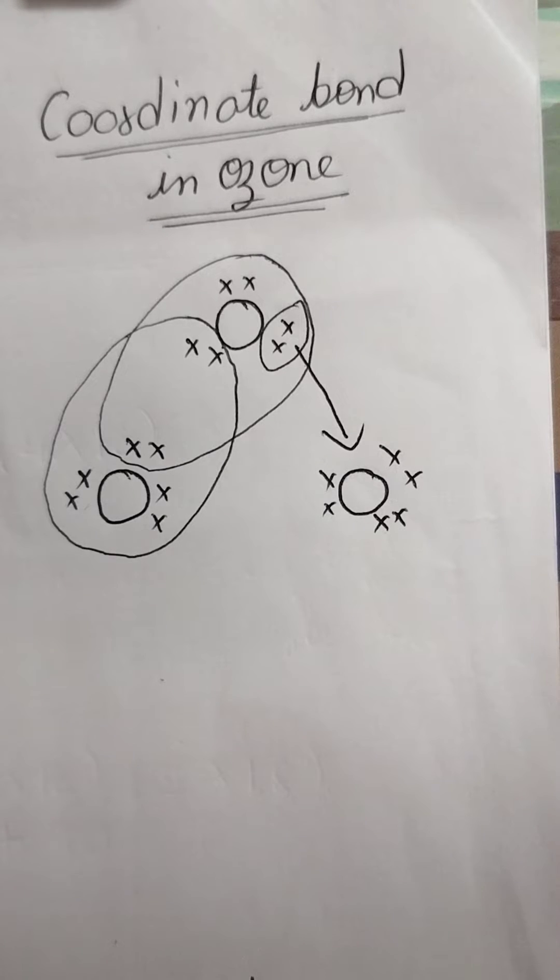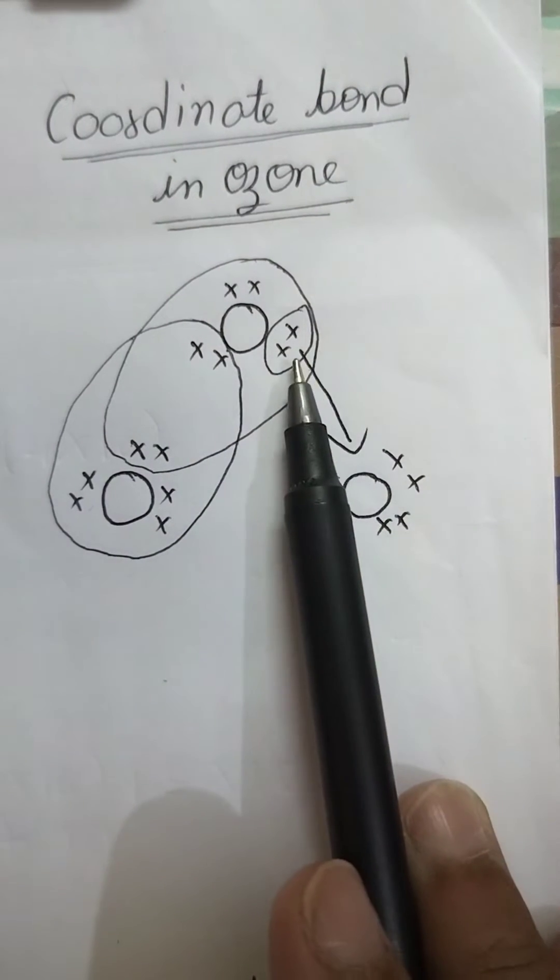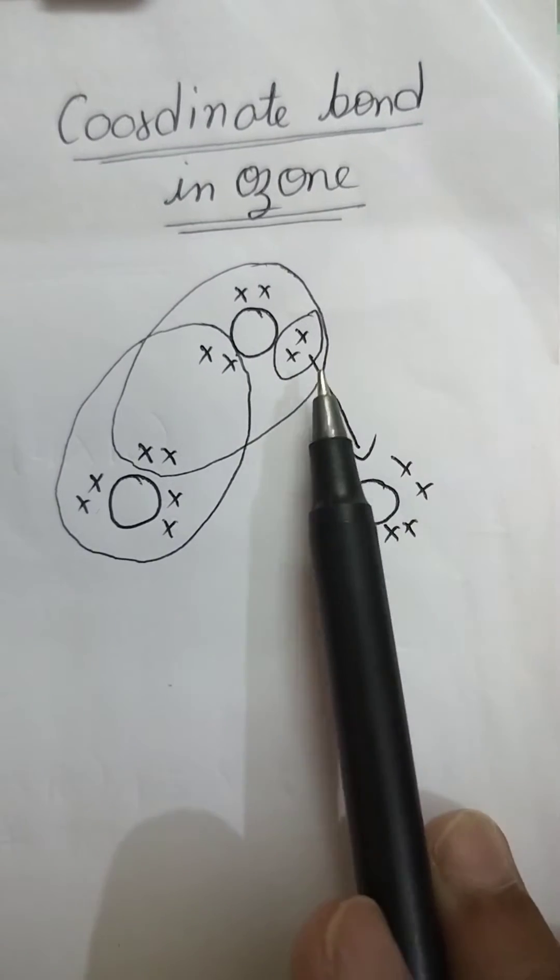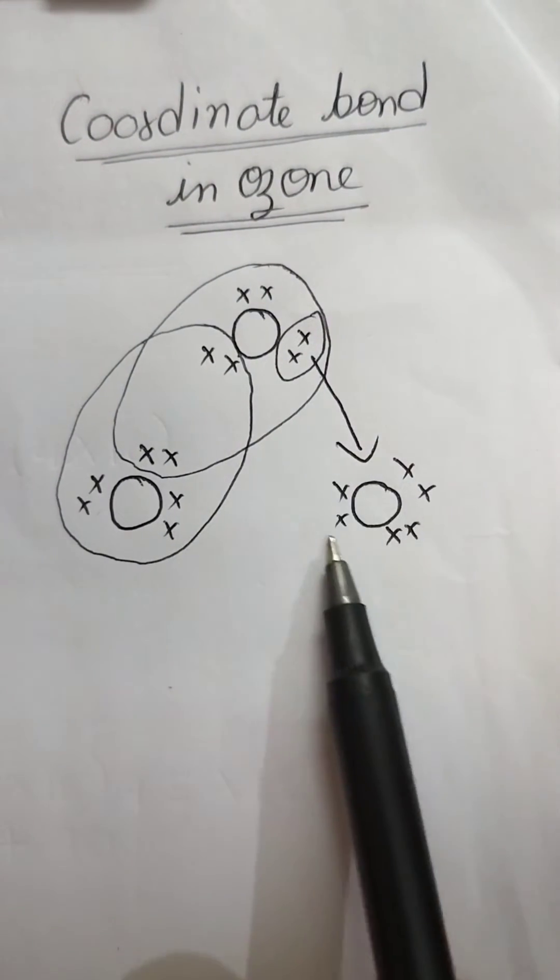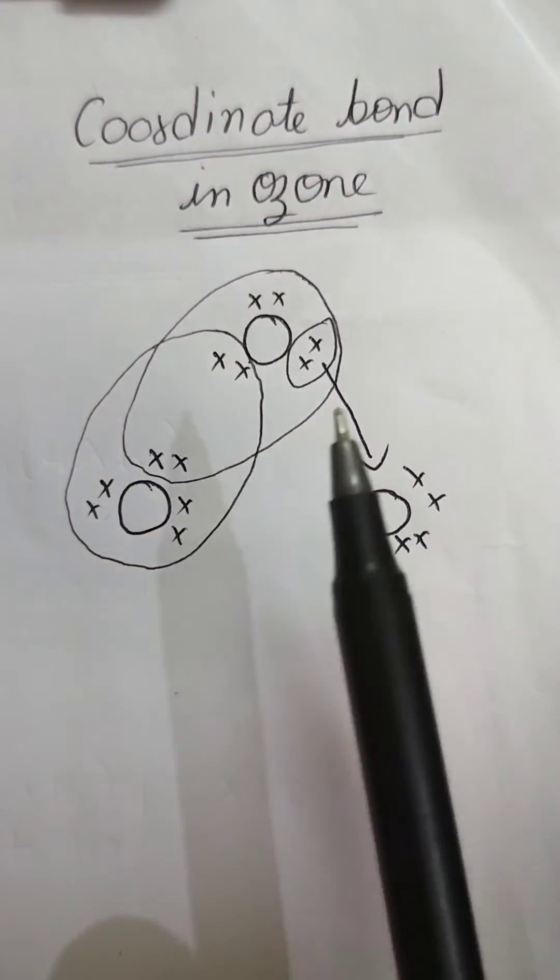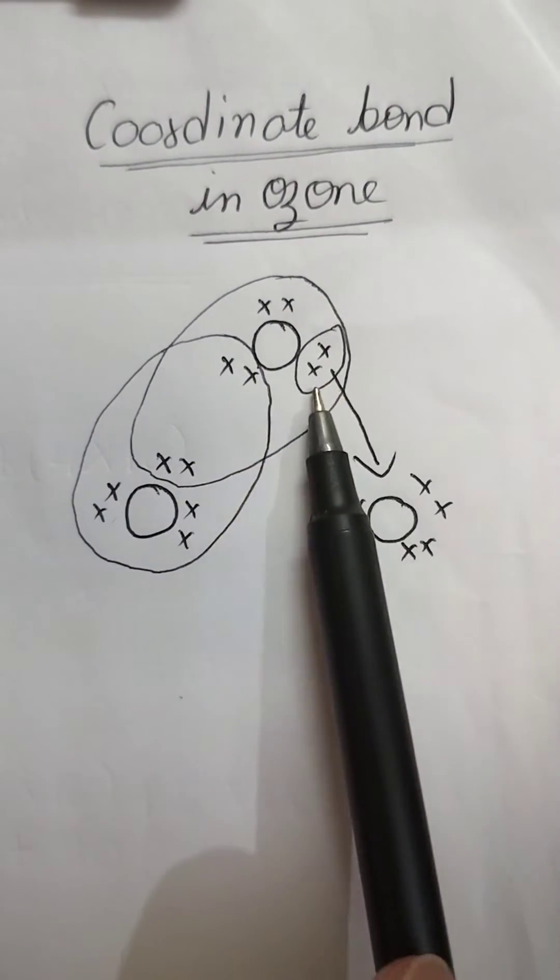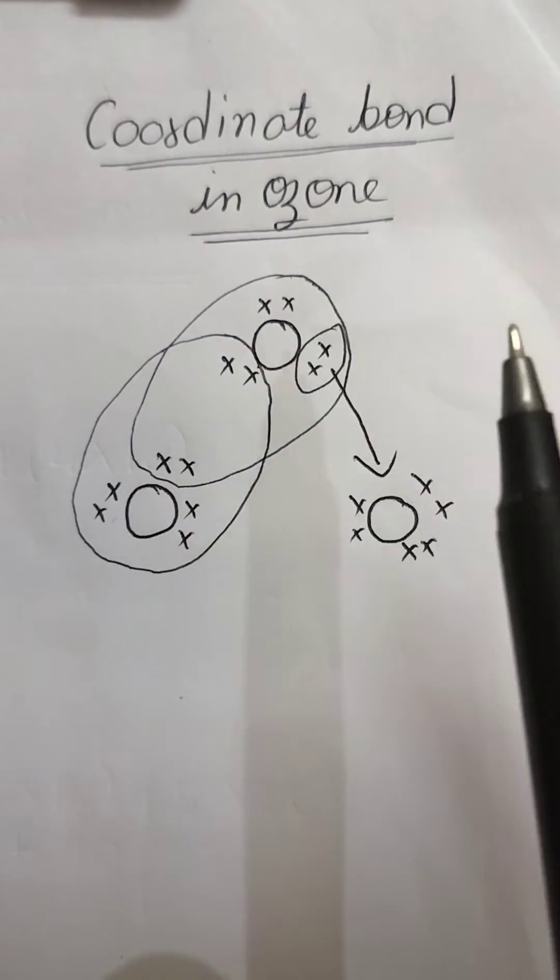In coordinate bond, what happens? Only one atom will share both the electrons with the other atom. The other atom in turn will not share anything. One will share a pair of electrons with the other atom. It is called coordinate bond.